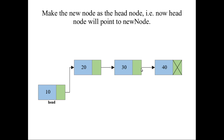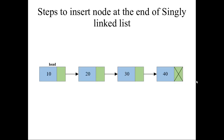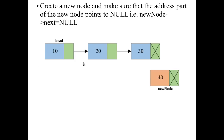Next, we are going to see insertion at the end of the linked list. Consider this linked list — we want to add node 40 at the end. The first step is to create the new node 40. Since this will be the final node, its address field should be set to null, because it will not have any link to a next node.